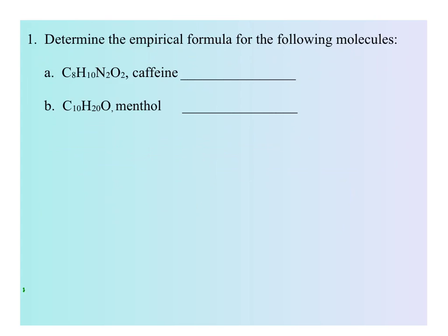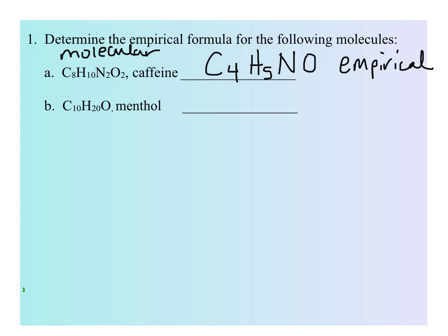Before we do some practice, let's look at how we manipulate subscripts in order to go from a molecular formula to an empirical formula. In examples A and B, we have two molecular formulas that are given. We can take the subscripts in letter A and divide them all by two to give us a smaller whole number ratio: C4H5NO. This is the empirical formula for caffeine. In letter B, we cannot divide the subscripts by a number to make them smaller — the last subscript is a 1 on the oxygen, and that's the smallest subscript possible. For this molecule menthol, the empirical and the molecular formulas are the same.